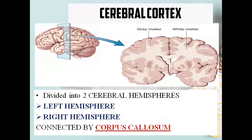Our cerebral cortex is divided into two hemispheres, the left and the right hemisphere. The middle portion connecting the left and right hemisphere is your corpus callosum — that is their connection.